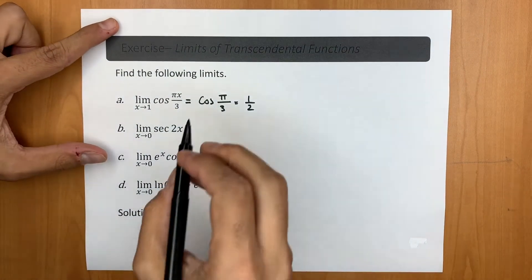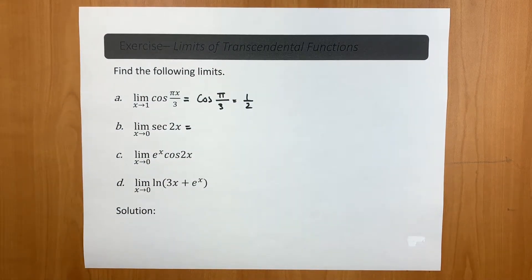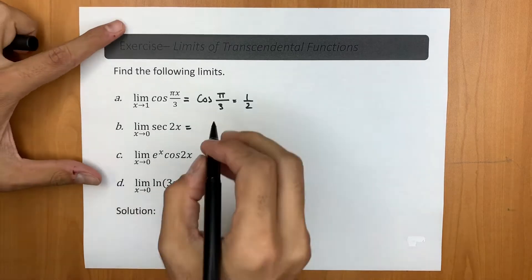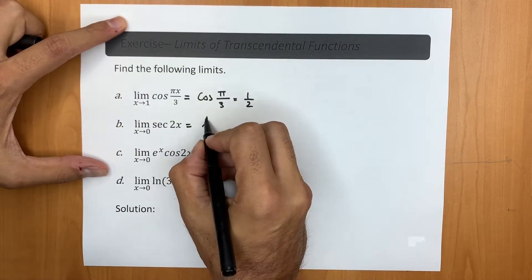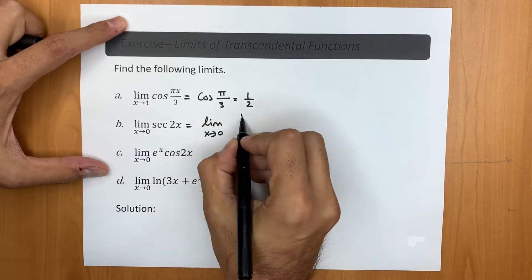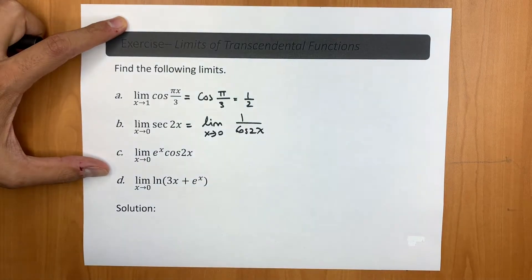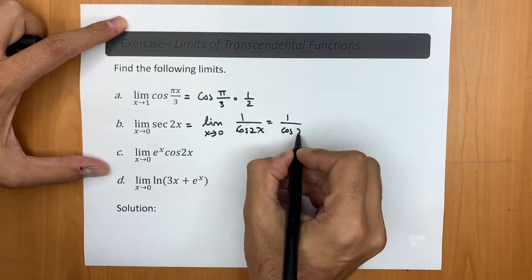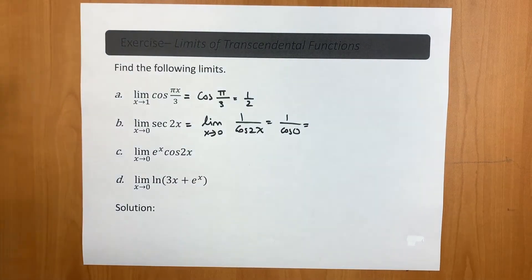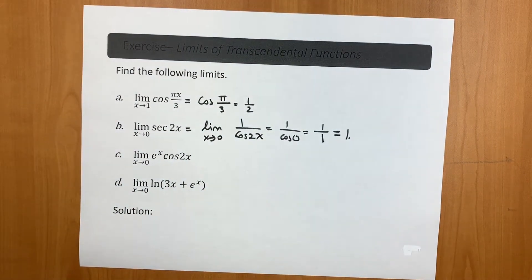For the second problem, we have the limit of secant(2x) as x approaches 0. Using the reciprocal identity, this limit equals 1 over cosine(2x). Substituting 0 for x gives 1 over cosine(0), and since cosine(0) equals 1, this is 1 over 1, so the limit value is just 1.